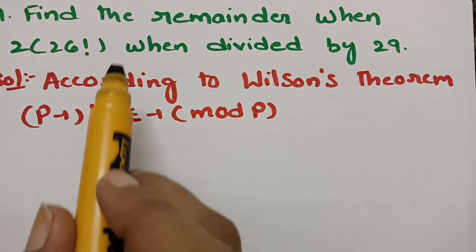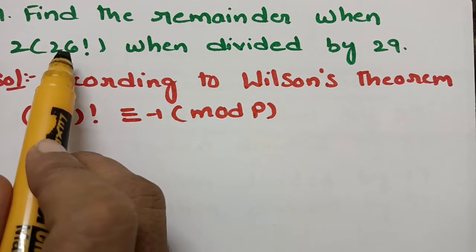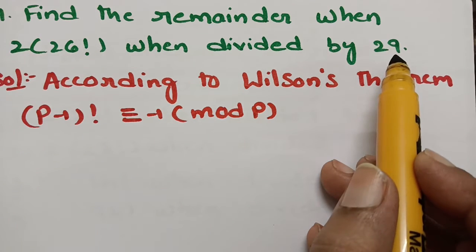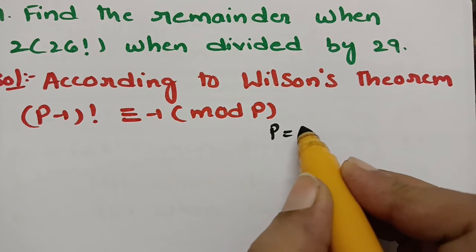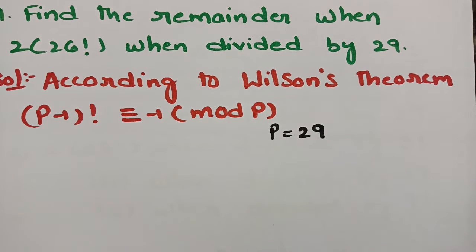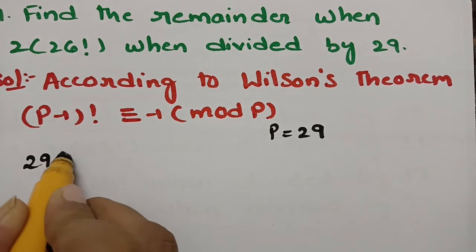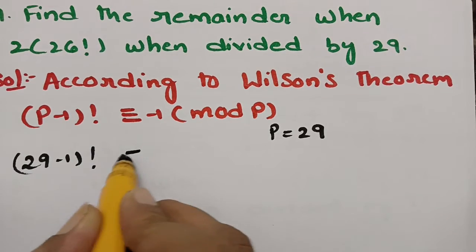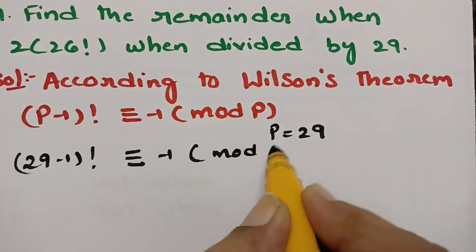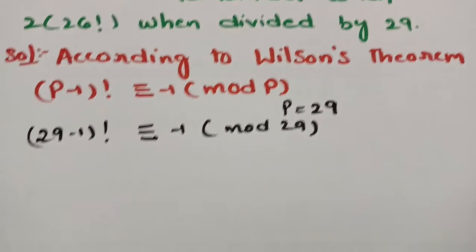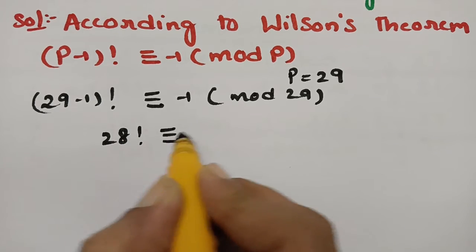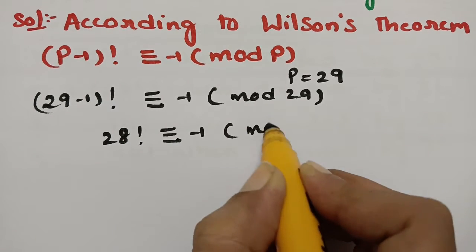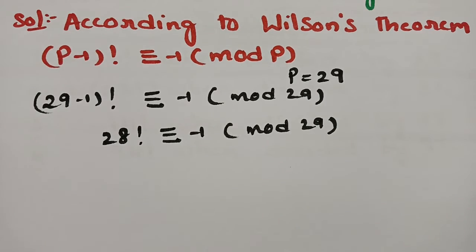We need to find the remainder when 2 × 26! is divided by 29. First, I take P = 29, which is a prime number. Substituting P = 29 into Wilson's theorem: (29 − 1)! ≡ −1 (mod 29), which gives 28! ≡ −1 (mod 29).